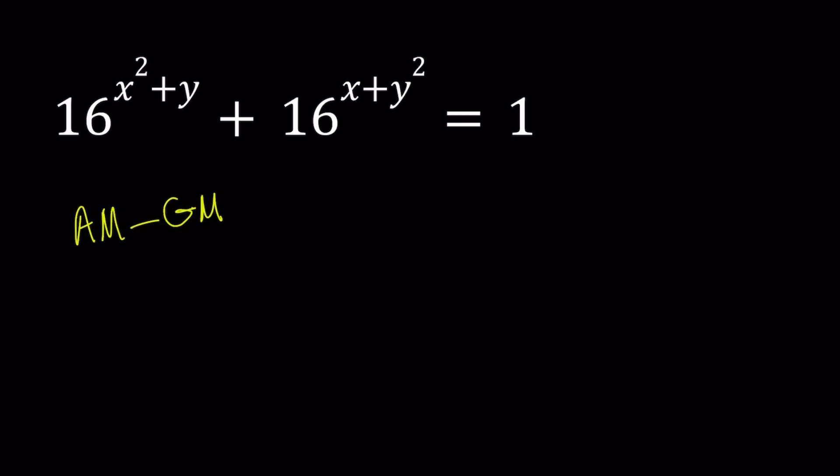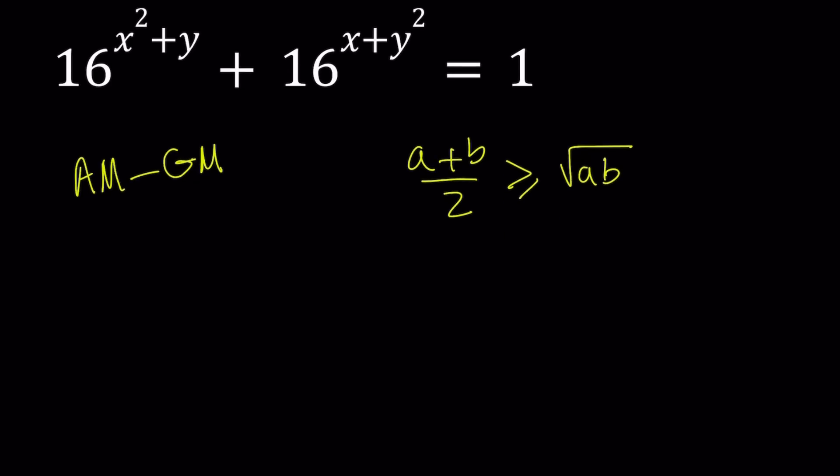You can take their arithmetic mean, which is the average, and then geometric mean. And their arithmetic mean is always going to be greater than or equal to their geometric mean. So for two numbers like A and B, we can write this as A plus B over 2 is always greater than or equal to the square root of AB. And proving this is fairly easy to do because you can go ahead and multiply both sides by 2.